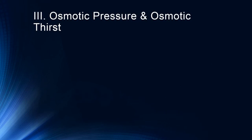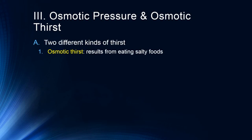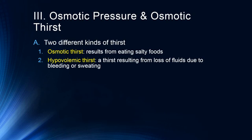There are two different kinds of thirst: osmotic thirst and hypovolemic thirst. Osmotic thirst tends to result from eating salty food — it occurs from an increase in salt, not a decrease in fluid. Basically we are out of balance and want more water. Hypovolemic thirst is a thirst resulting from loss of fluids due to bleeding or sweating, so we're motivated to increase our volume of water because we've lost fluids. That's why it's called hypovolemic — meaning too low volume.